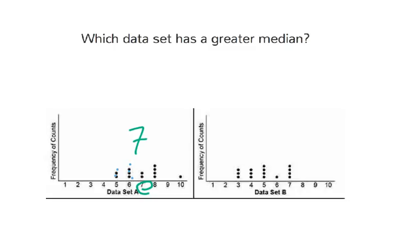And if I do the same thing for data set B, 1, 2, 3, 4, 5, 6, I see the middle value or the median is 4.